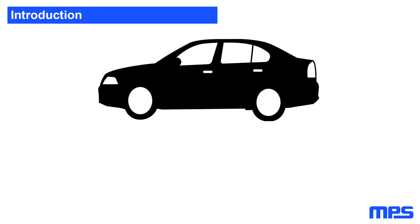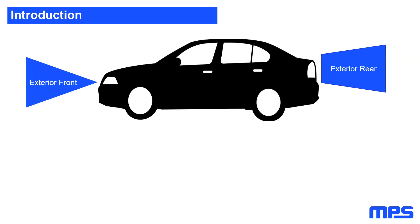When talking about automotive lighting applications, we can classify them in three different categories. First, the exterior front lights, such as headlights, high and low beams, and daytime running lights. Then we find the exterior rear lights that include tail lamps, stop lights, and other decorative and signaling lights, and finally the interior lights.